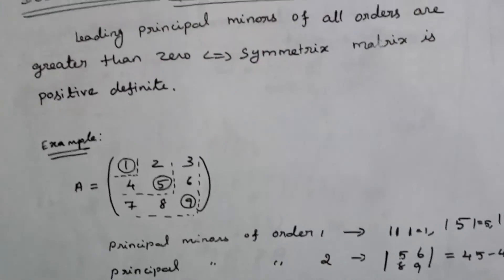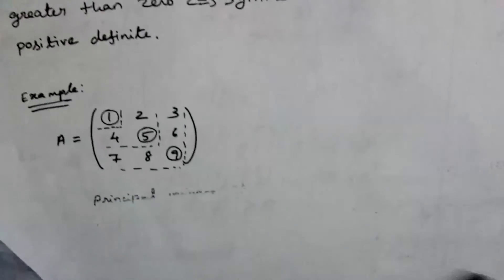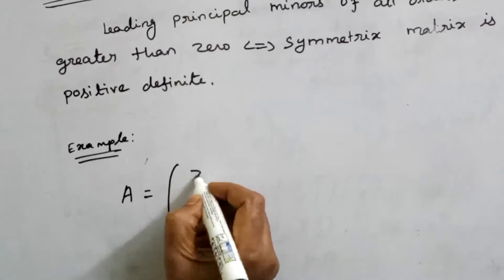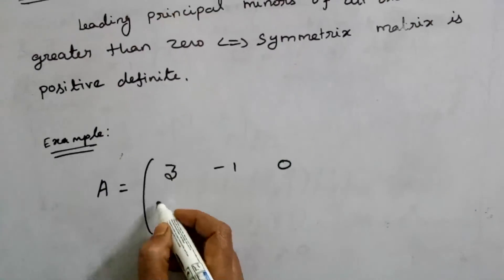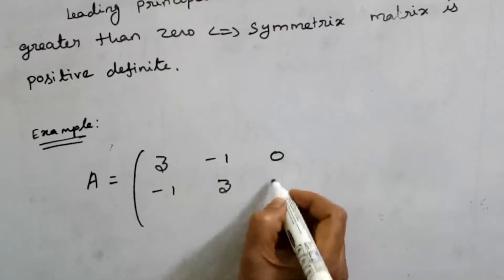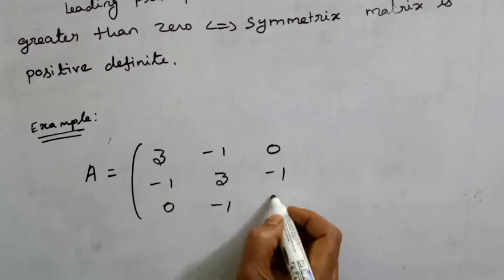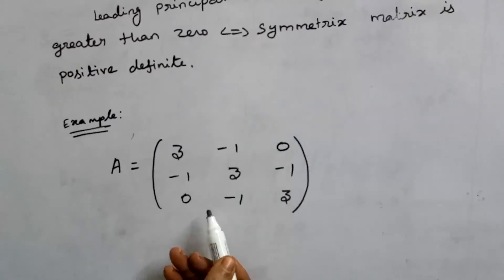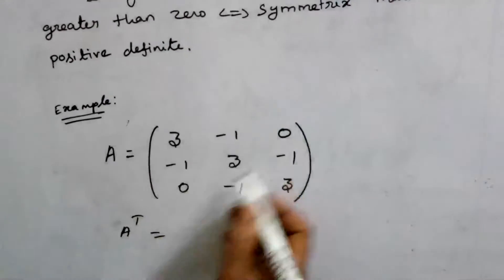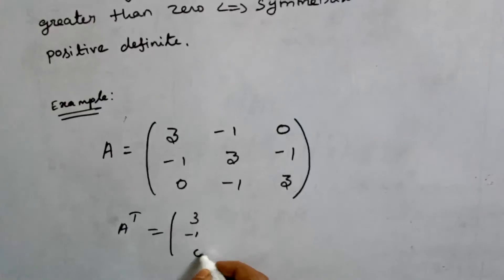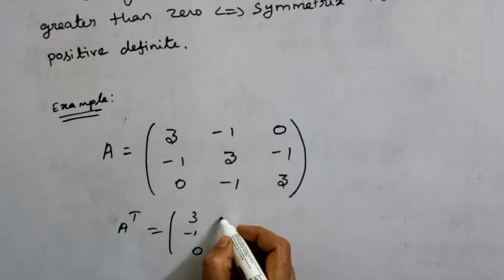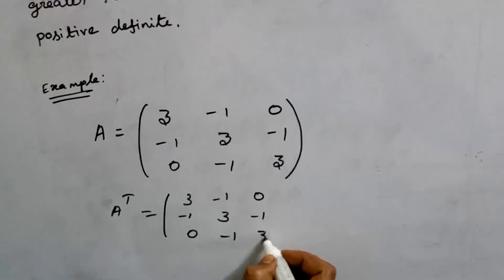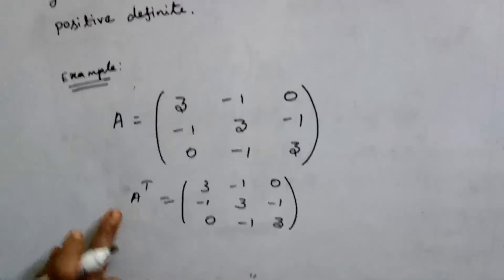Let's check the 3 by 3 matrix A = [3, -1, 0; -1, 3, -1; 0, -1, 3]. This matrix is symmetric: the first row equals the first column [3, -1, 0], the second row equals the second column [-1, 3, -1], and the third row equals the third column [0, -1, 3]. We confirm A-transpose equals A, so this is a symmetric matrix.